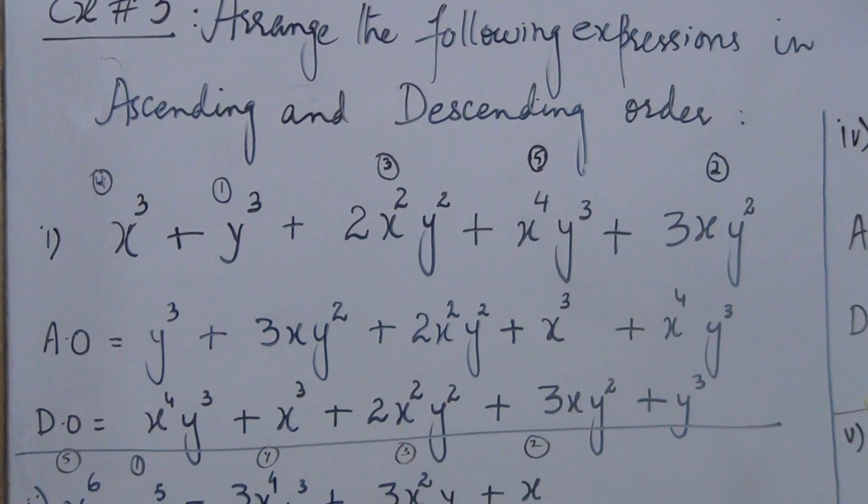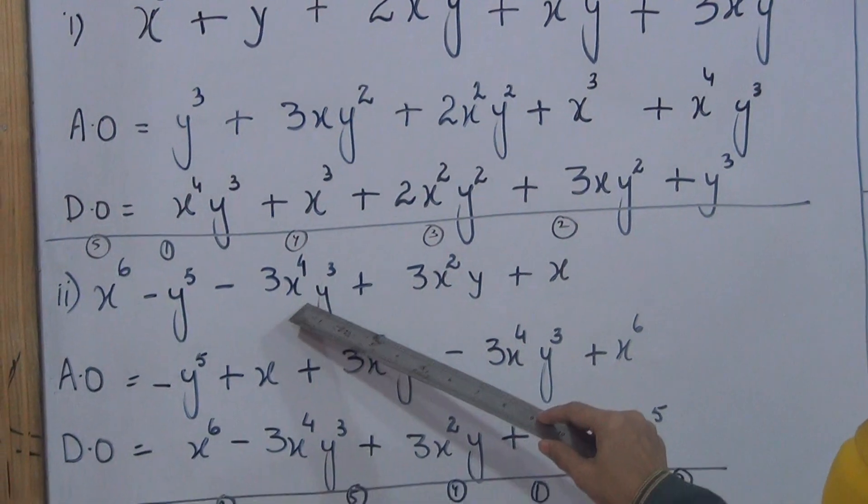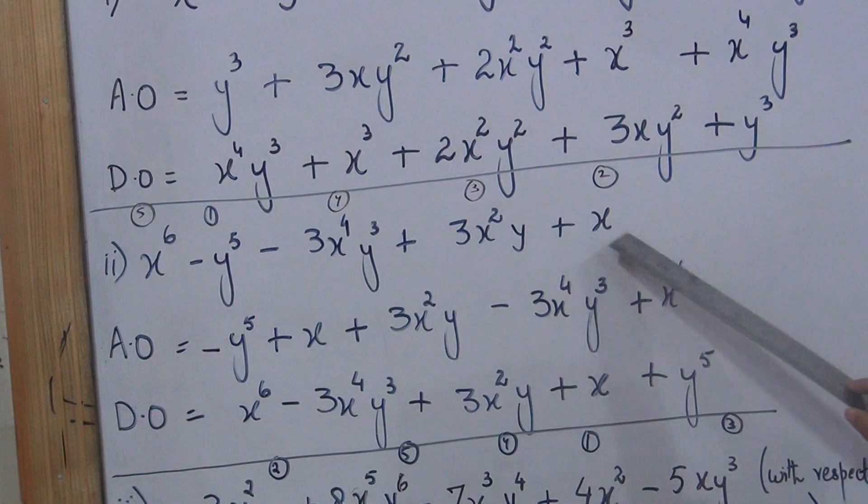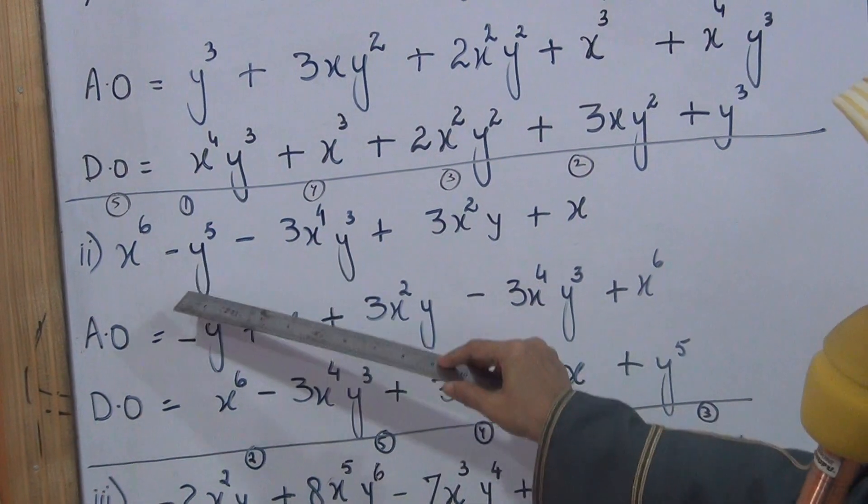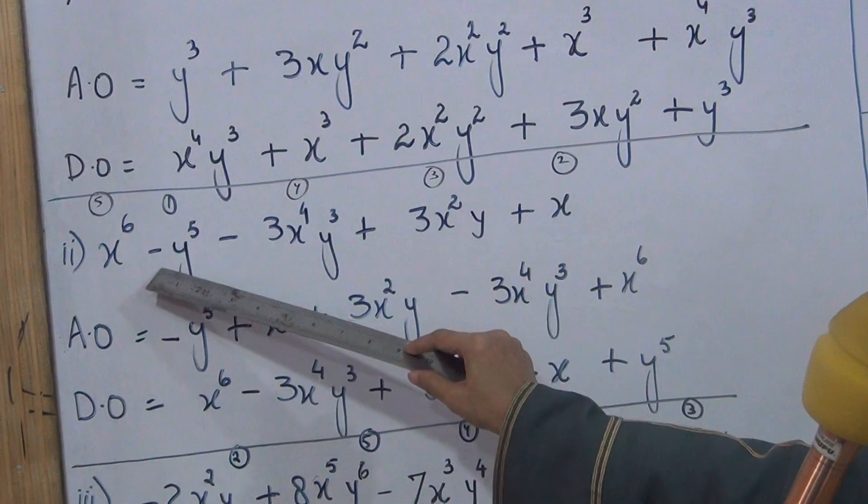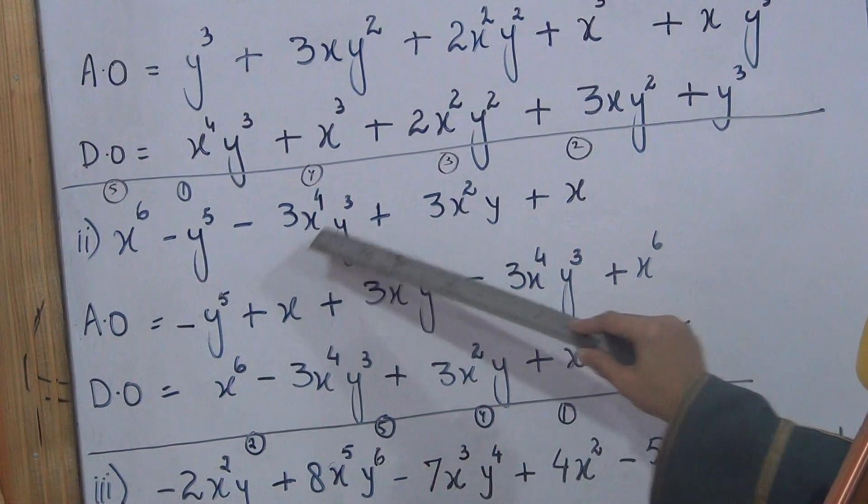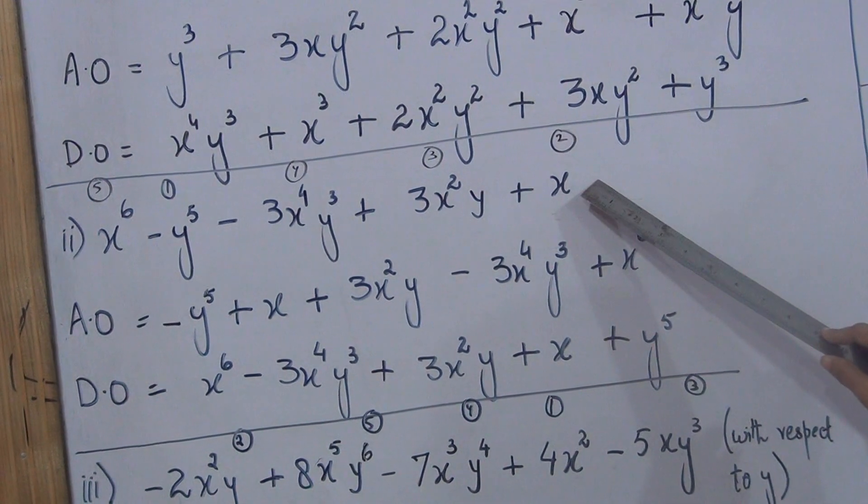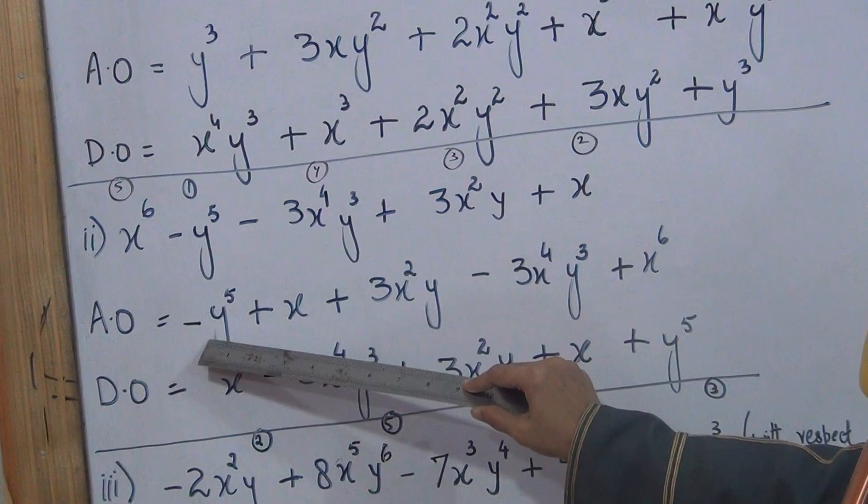Second expression is x raise to power six minus y5 minus three x raise to power four y cube plus three x square y plus x. In this also you can see, x we are arranging. X is six, here x is zero, x is four, x is two. Here x power is not there, meaning it is hidden one.